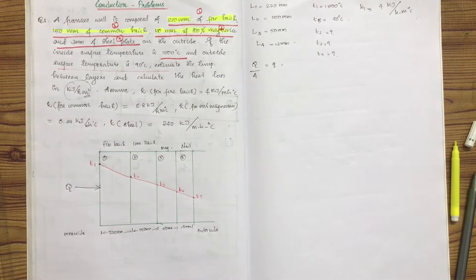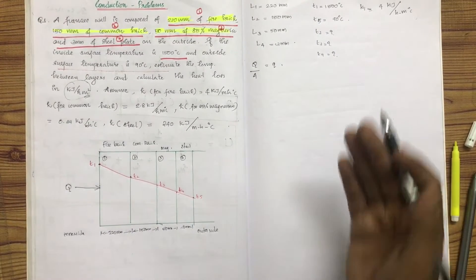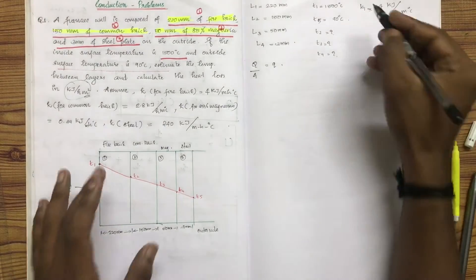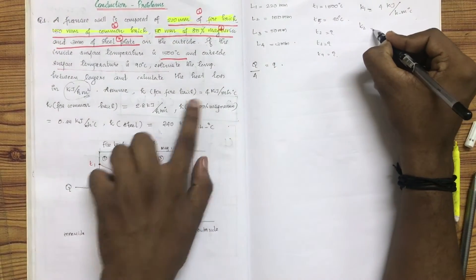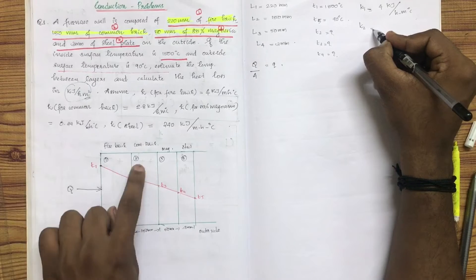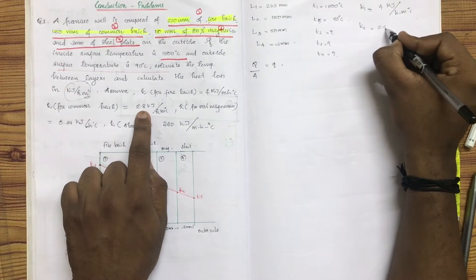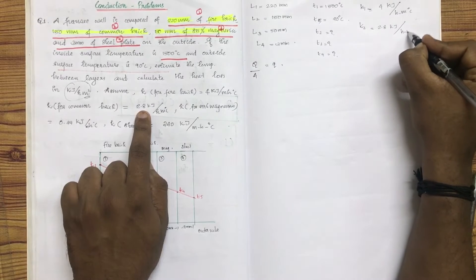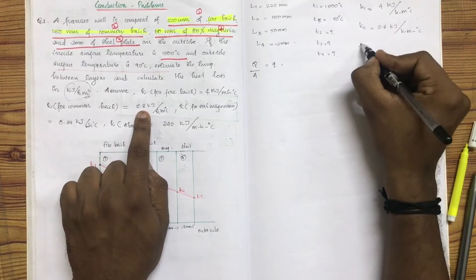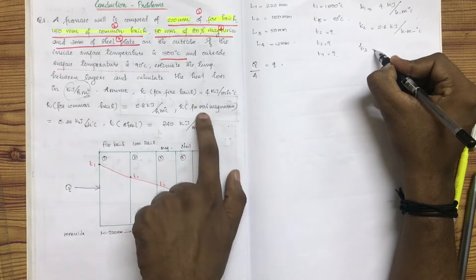We will convert kJ per second and kW. K2 is equal to 2.8 kJ per meter per hour per degree.